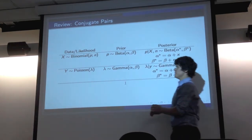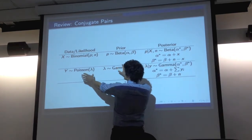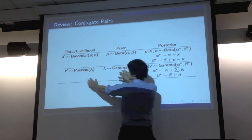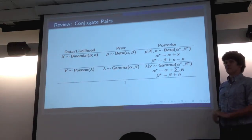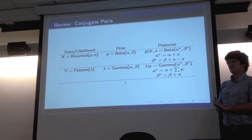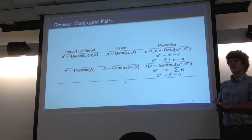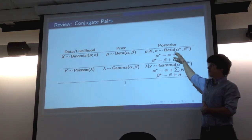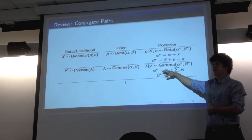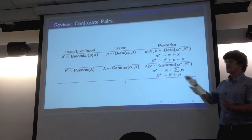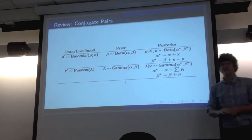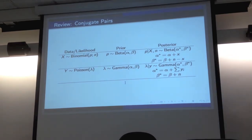This is your recipe for getting the posterior distribution. You need to write your problem into this form, and you automatically know that your posterior takes this one. We focused on the beta-binomial and the Poisson-gamma, but there are others. Any questions about this?